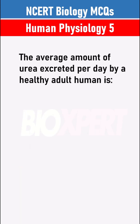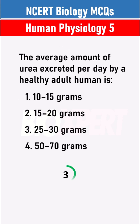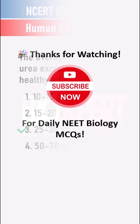The average amount of urea excreted per day by a healthy adult human is: Answer: 25 to 30 grams.